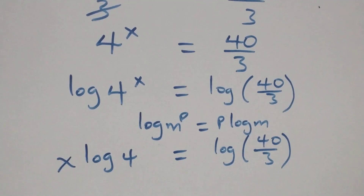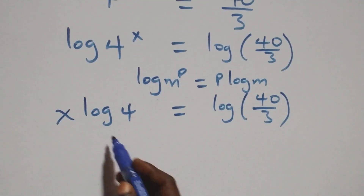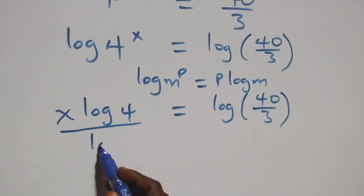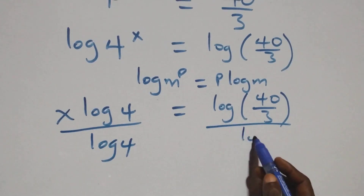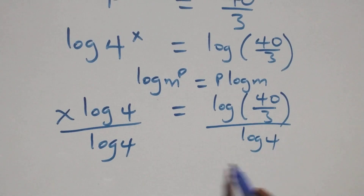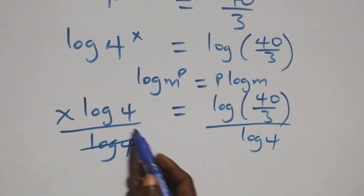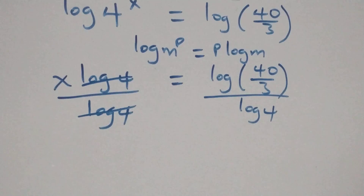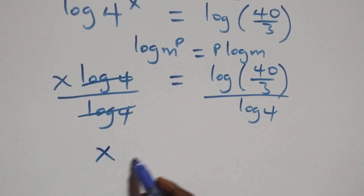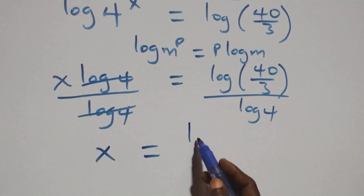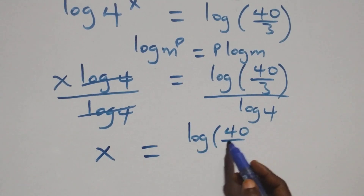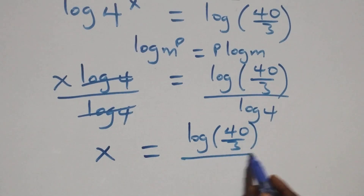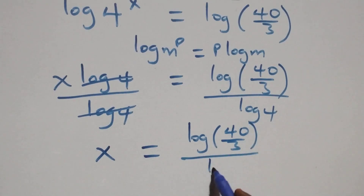The next step here, we divide both sides by log 4. The log 4s cancel each other, and we have x equals log(40/3) divided by log 4.